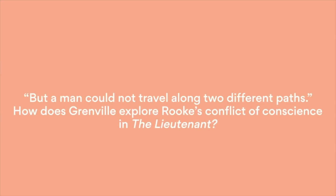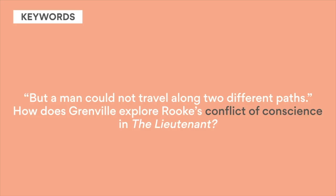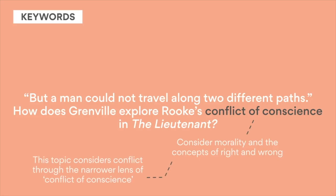Today's prompt is: 'But a man could not travel along two different paths.' How does Grenville explore Rook's conflict of conscience in The Lieutenant? Start off by focusing on the key words in this prompt, especially the phrases that resonate with you. In particular, let's look at the phrase 'conflict of conscience,' as this captures the essence of the prompt. Conflict of conscience suggests internal conflict, which implies we will need to consider morality and the concepts of right and wrong, especially when a difficult decision must be made and sides need to be taken. Conflict is a central theme of The Lieutenant; however, this topic considers it through the narrower lens of conflict of conscience.